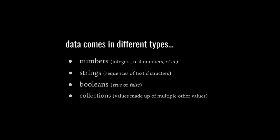Now data can come in many different kinds, but the essential kinds, which most things are then made of, are numbers, strings, booleans, and collections.